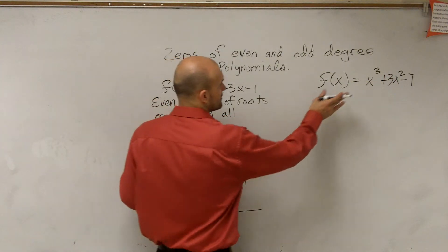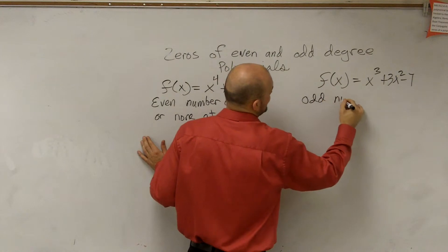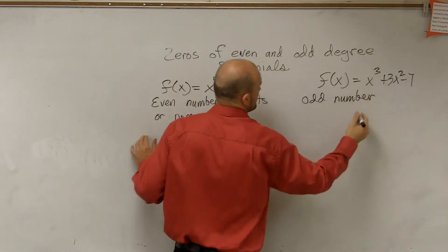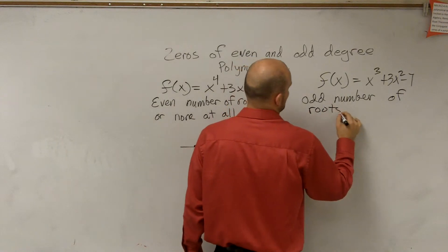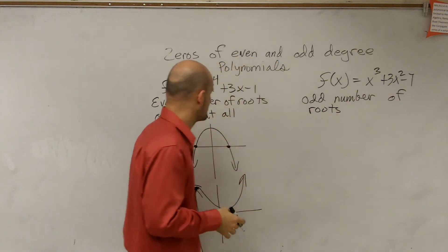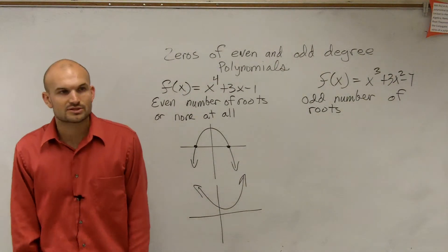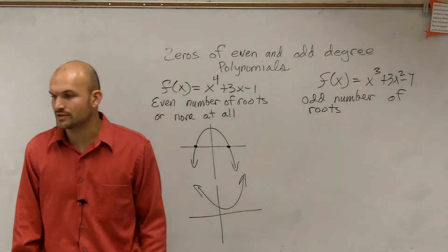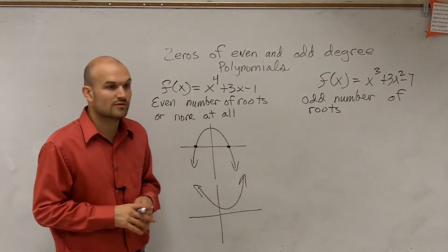So when we have an odd, a polynomial with an odd degree, we are going to have an odd number of roots, or zeros, or x-intercepts. OK? Depends on what we're dealing with. There's pretty much looking at a lot of the same things, just depending if we're dealing with an equation or a function. So odd number of roots.